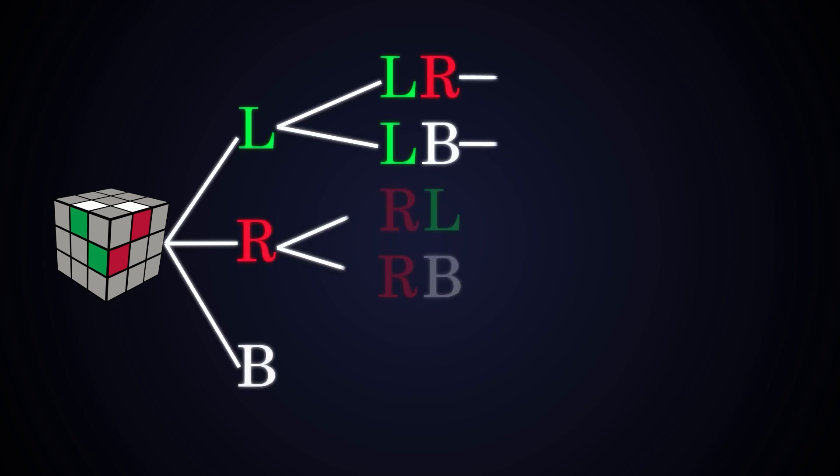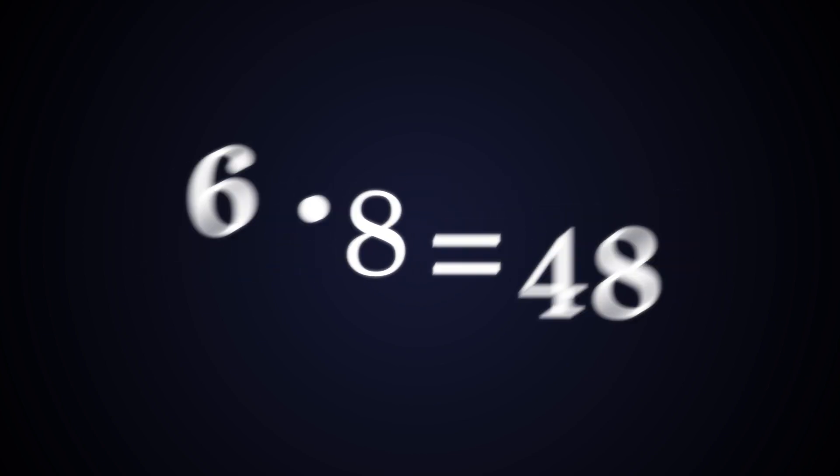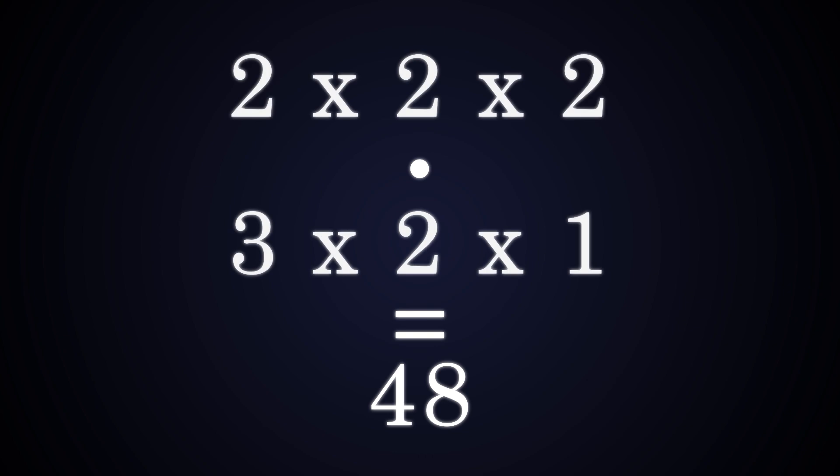I'm of course only showing one way to do it, but if we make the decision tree once again with letters representing the left, right, and bottom slots, you'll see there's six in total. And if we change the amount of branches into just numbers multiplying with each other, you'll get 48.